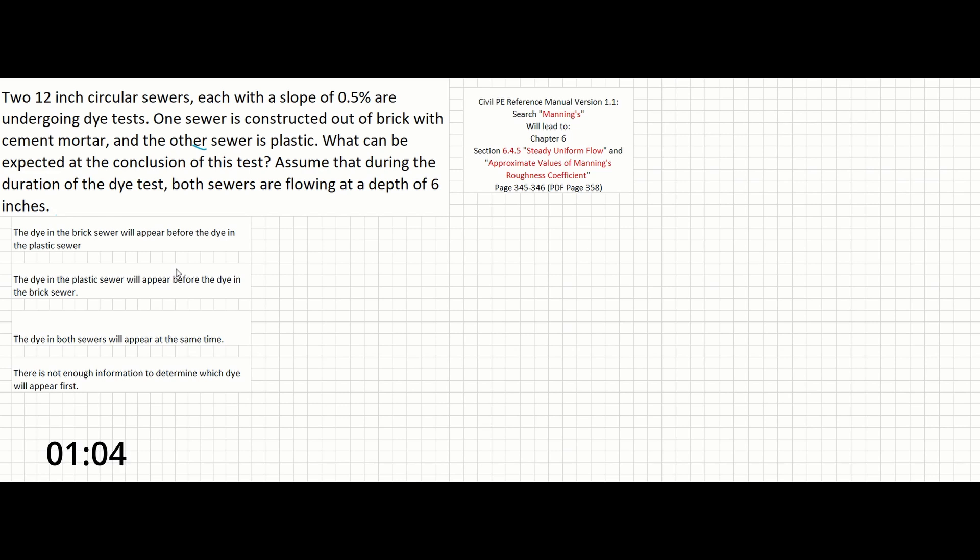However, given that the sewers are identical except for their material, we can also use our understanding of hydraulic concepts to recognize that the sewer with the higher Manning n value, aka the rougher sewer material, will be the sewer with the slower velocity. Conversely, the sewer with the lower Manning n value, aka the smoother sewer, will have the faster velocity.